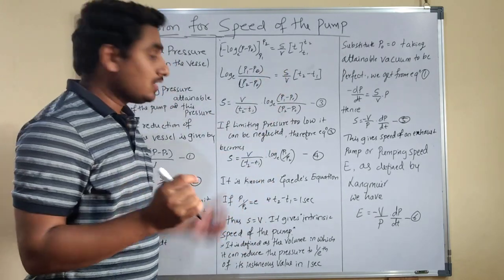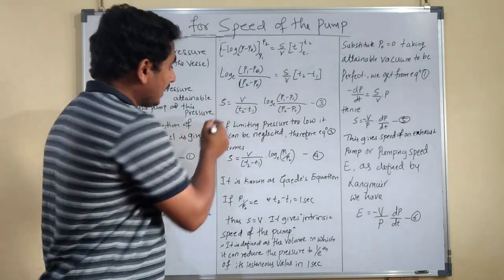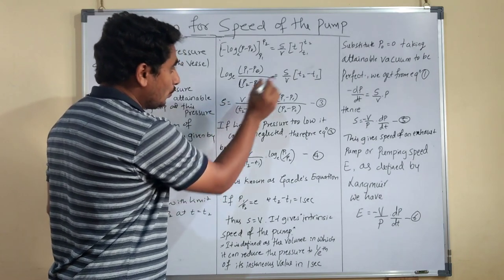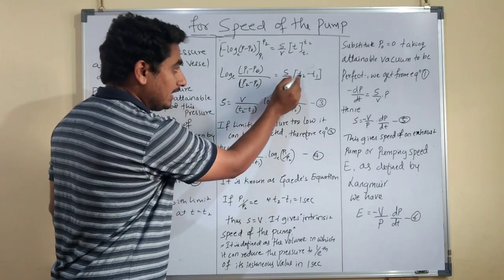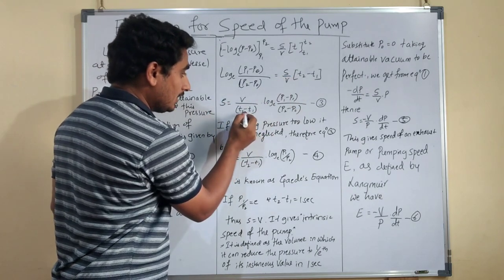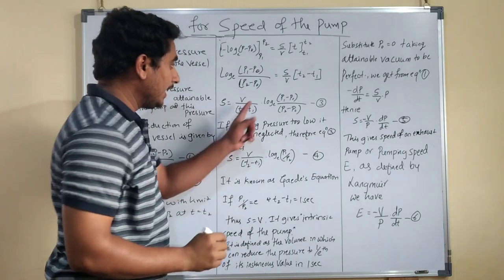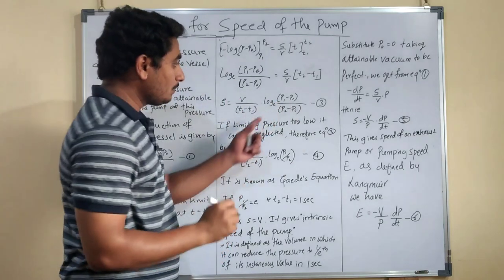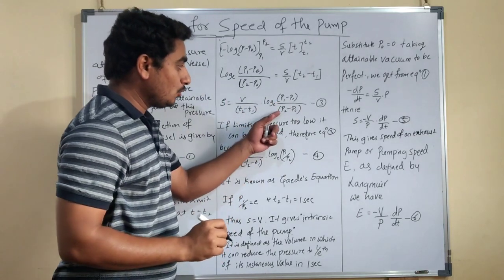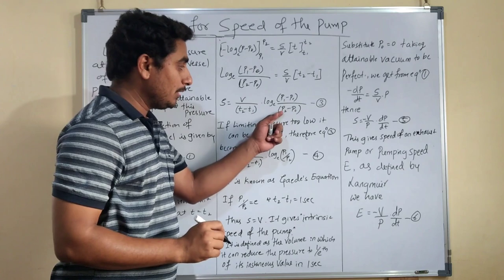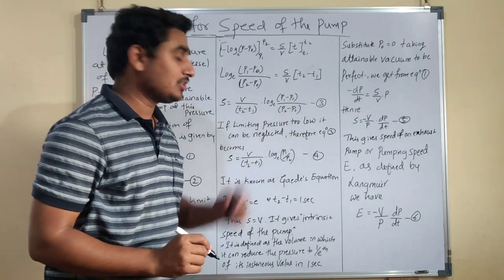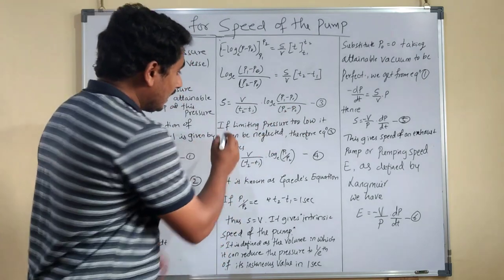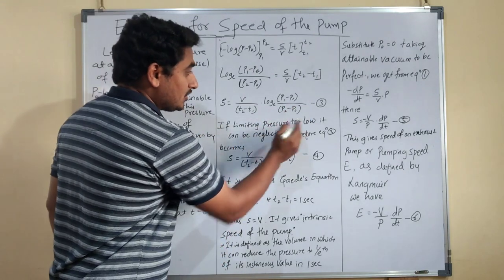Now solving for S, we get: S = V/(t2 − t1) · log[(P1 − P0)/(P2 − P0)]. This is equation number 3.